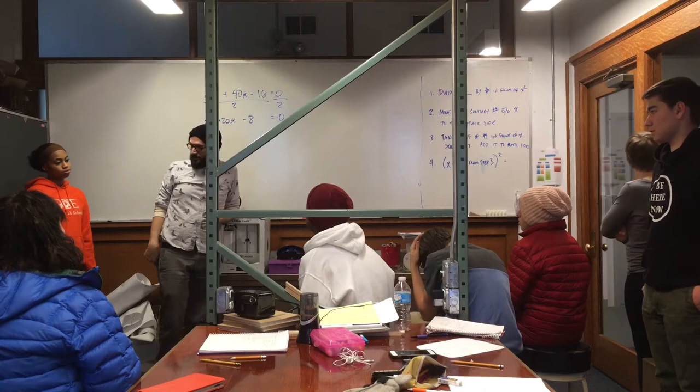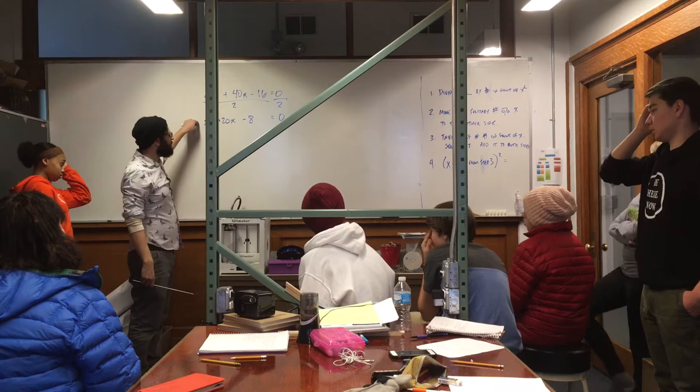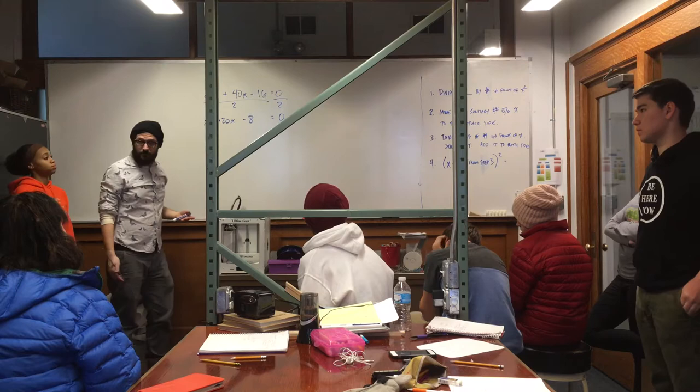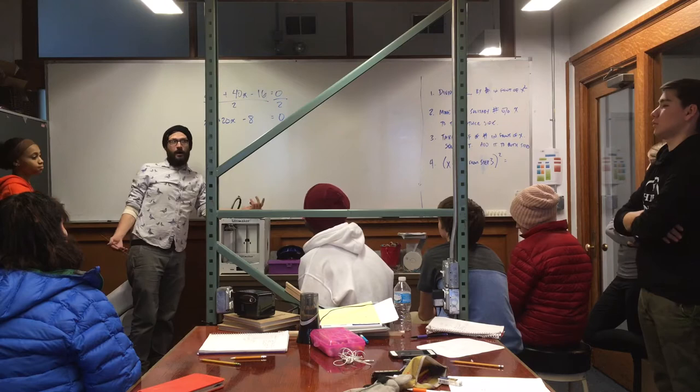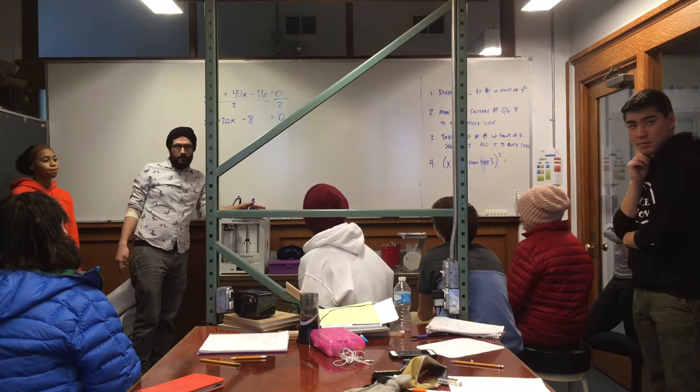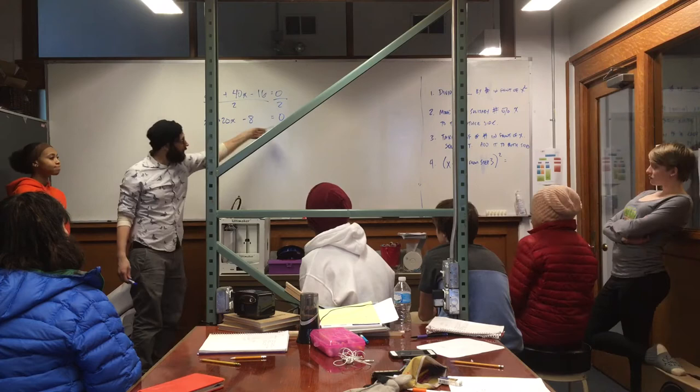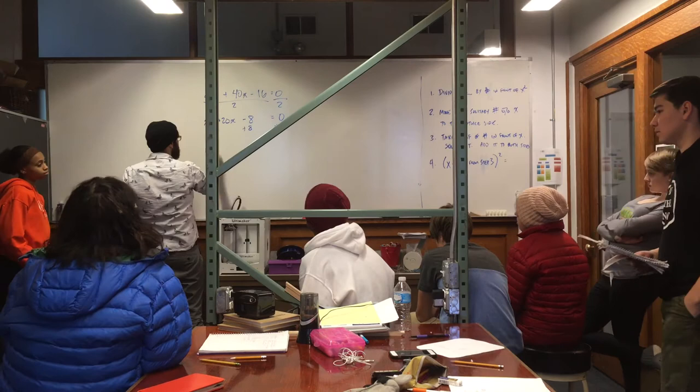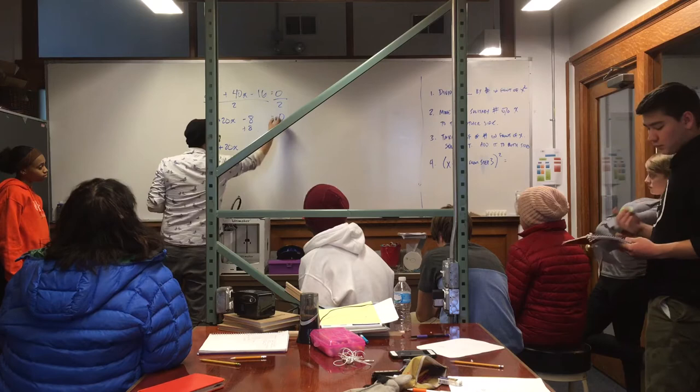So now we've got something that's a little simpler in format. Over here, everything gets divided by 2. And luckily in this case, 2 divided by 2 is 1. I just get x squared. 40 divided by 2 is just 20, 20x and 16 divided by 2 is a negative 8. Now I'm going to move this guy over here. So we're going to add 8 to both sides. I'll just go ahead and do that, plus 8 plus 8. So now this cancels out. I've got x squared plus 20x, and 0 plus 8 is 8.